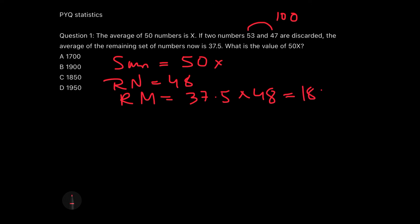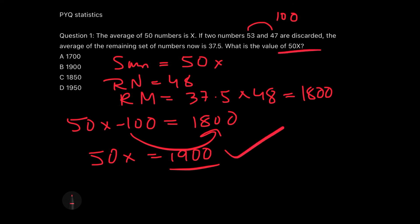If you subtract 100 from the existing sum, you will get the mean of the remaining numbers and mean of the remaining numbers is 37.5. Remaining numbers are 48 and remaining mean will be 37.5 into 48, which gives me 1800. I know that if I subtract 100 from my sum, I would be getting the average of the remaining numbers, that is 1800. It's so simple to shift this minus 100 to the other end and get 50x equals 1900. They didn't even ask us x, they asked us 50x, so 50x is 1900, that is option B.